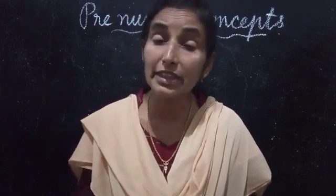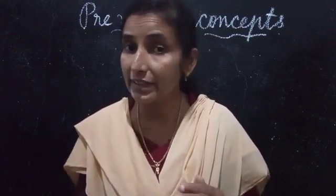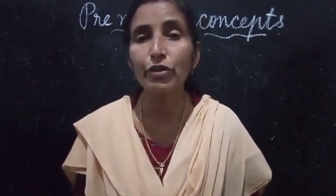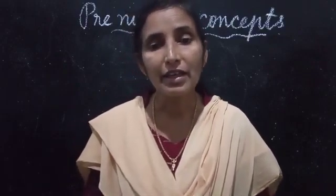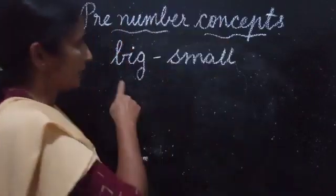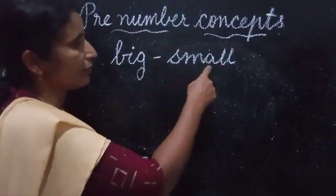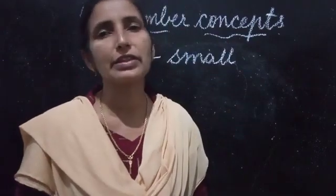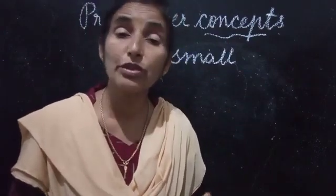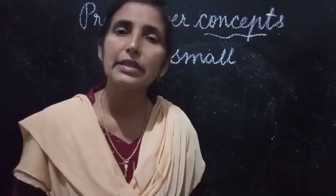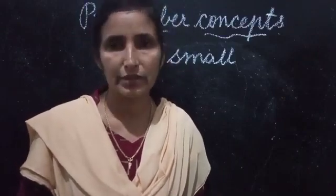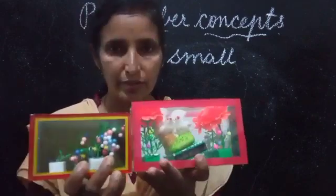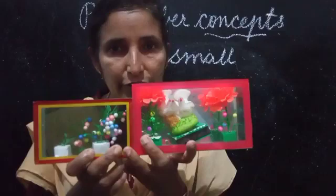The first word is Big and Small. Do you know the spelling of big and small? Let me write it. B-I-G, Big. S-M-A-L-L, Small.